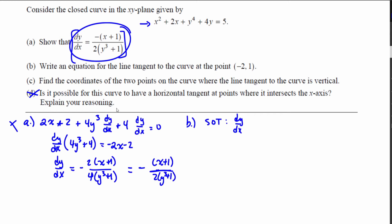So I want to find the slope of the tangent line and I'm going to use this point negative 2, 1. That's my point of tangency, so that's going to be negative negative 2 plus 1 all over 2 times 1 cubed plus 1.